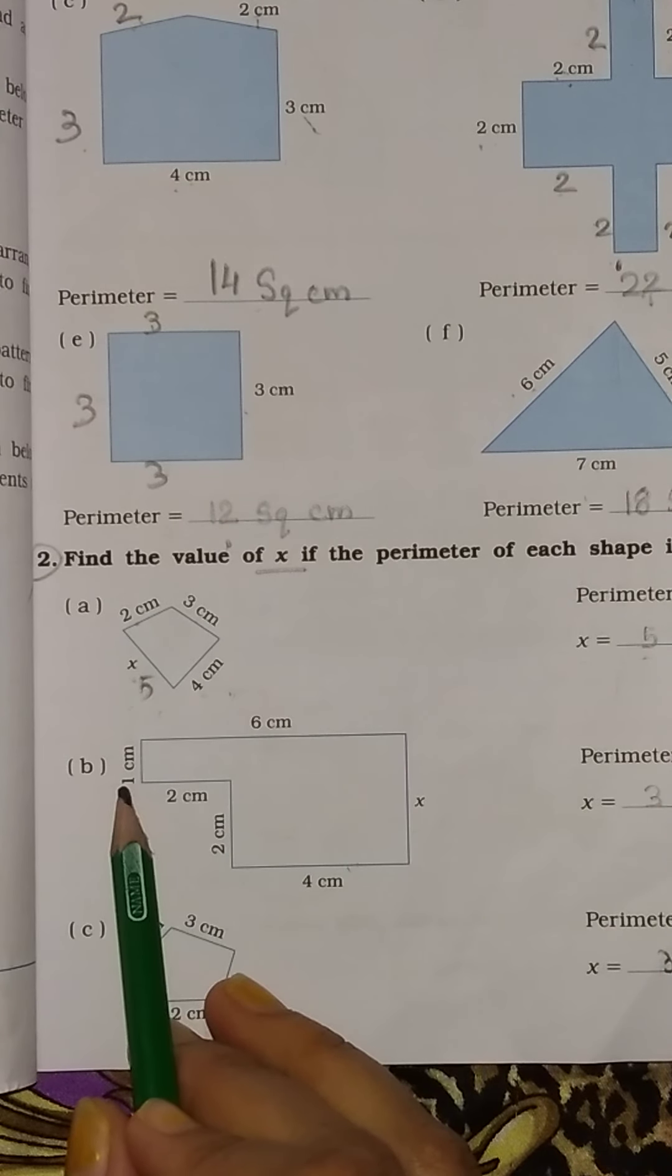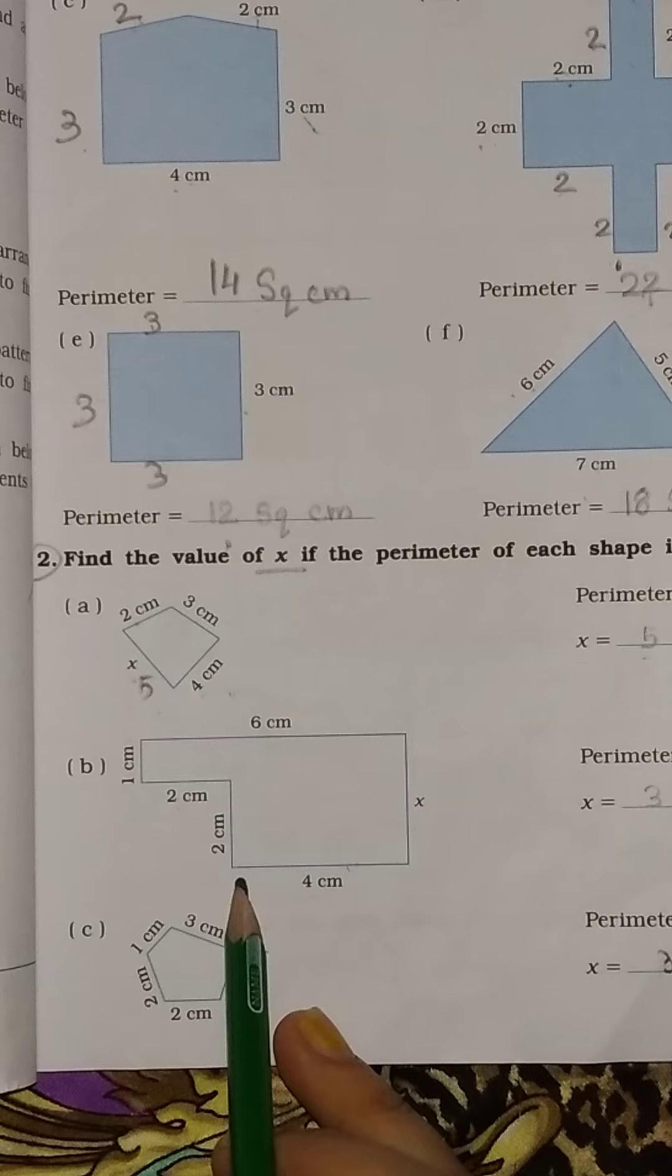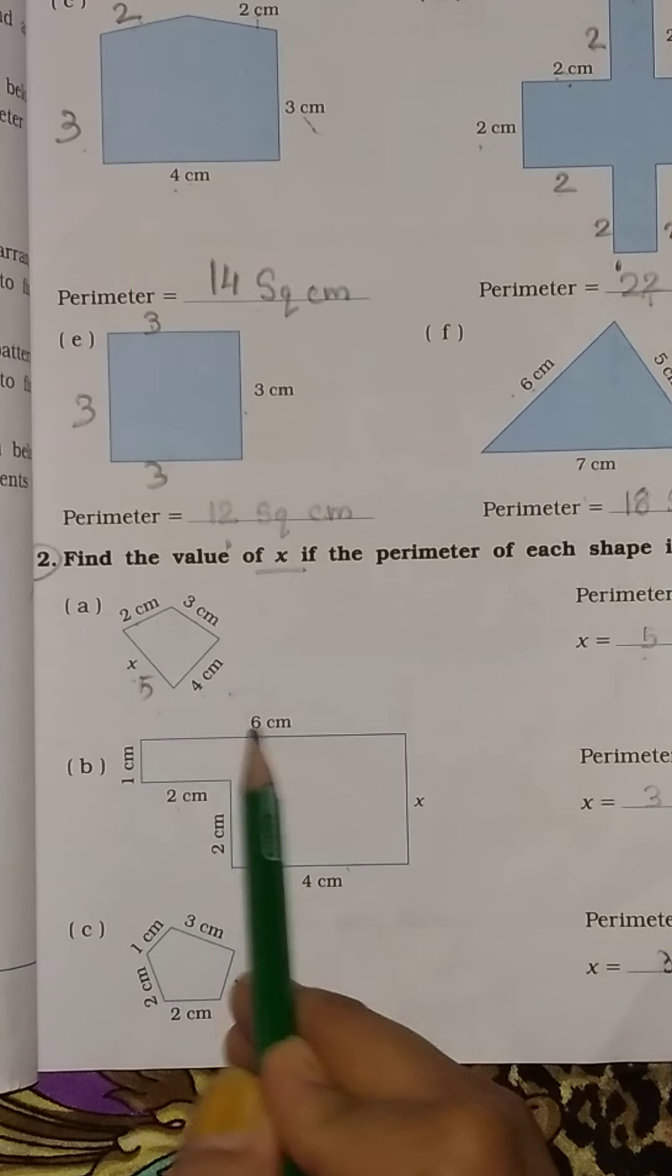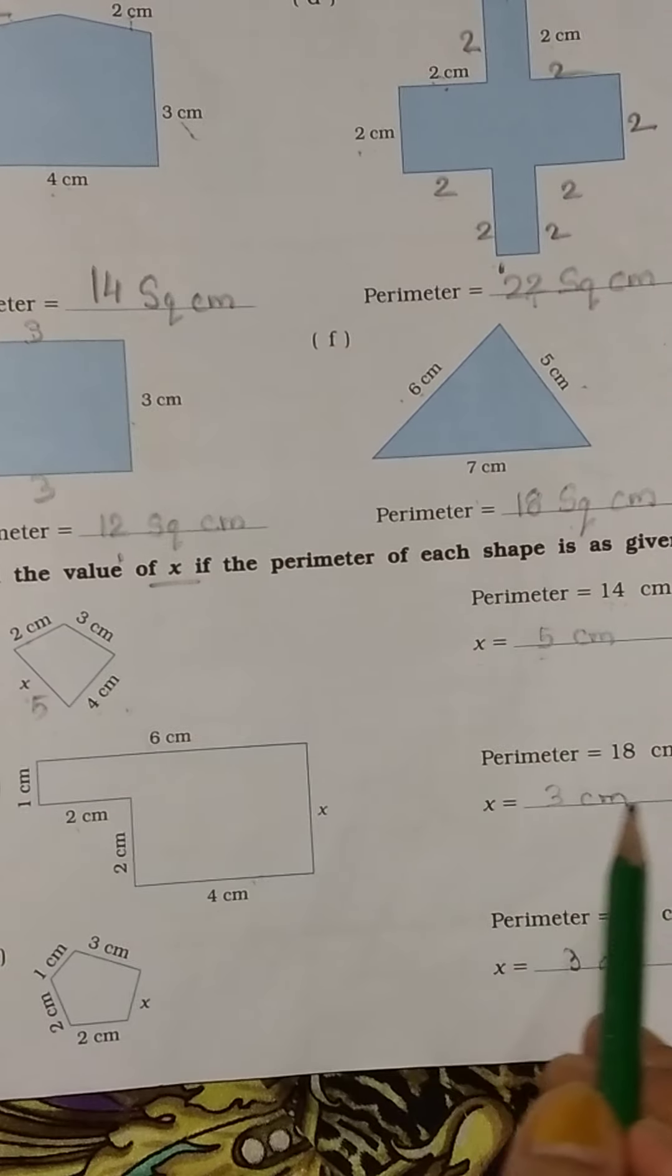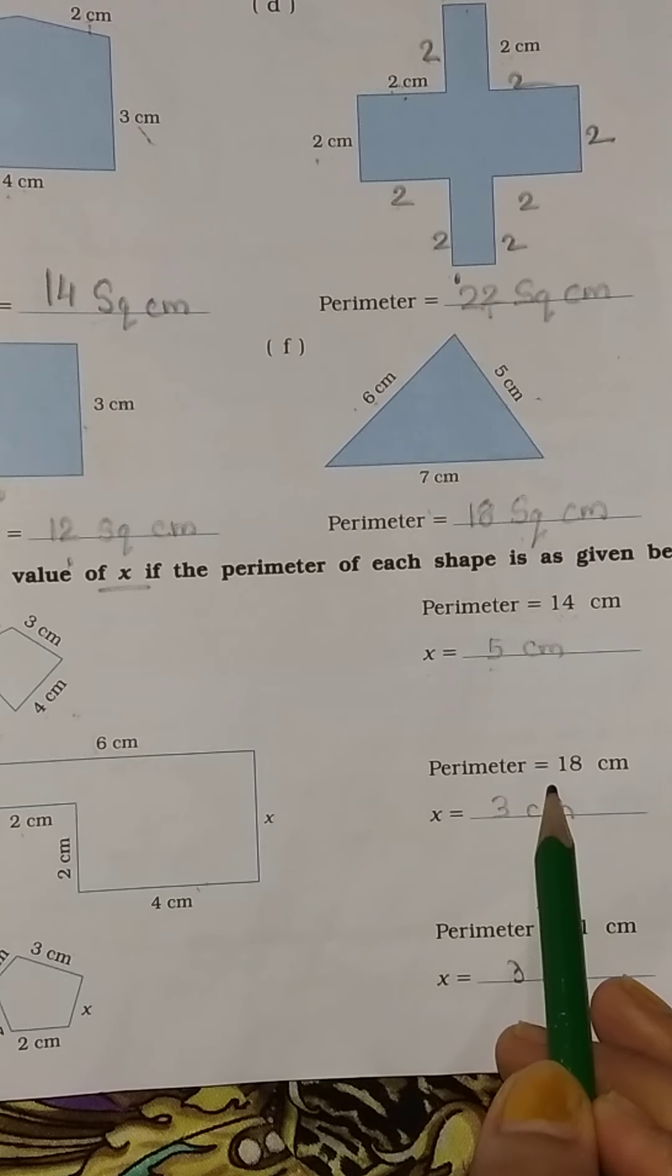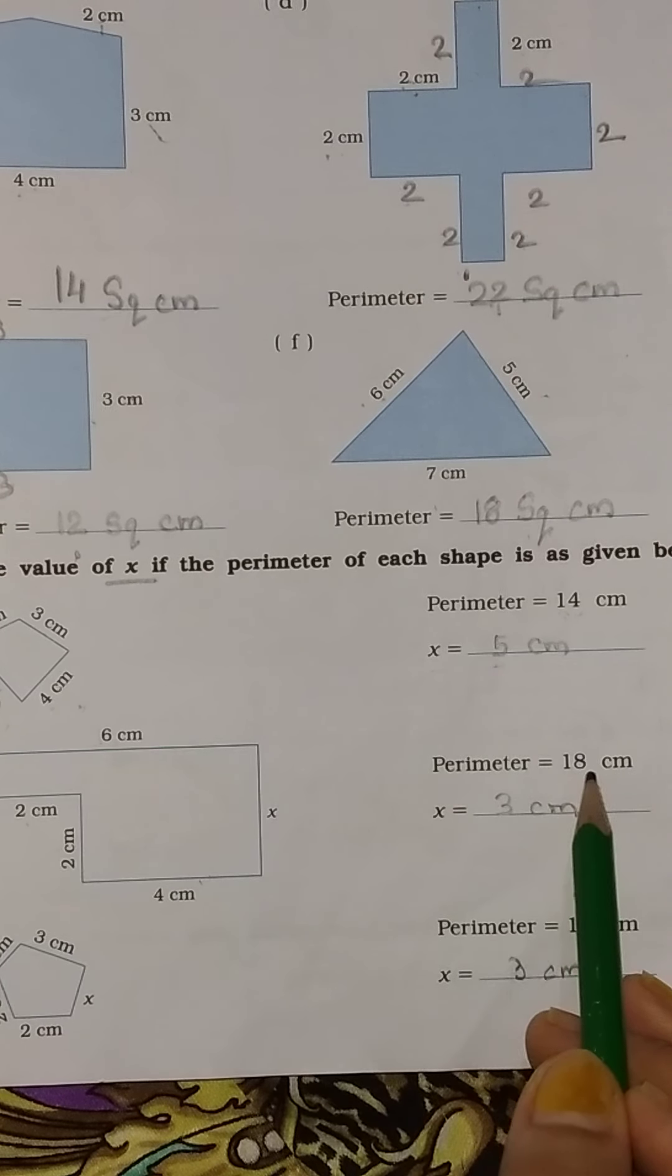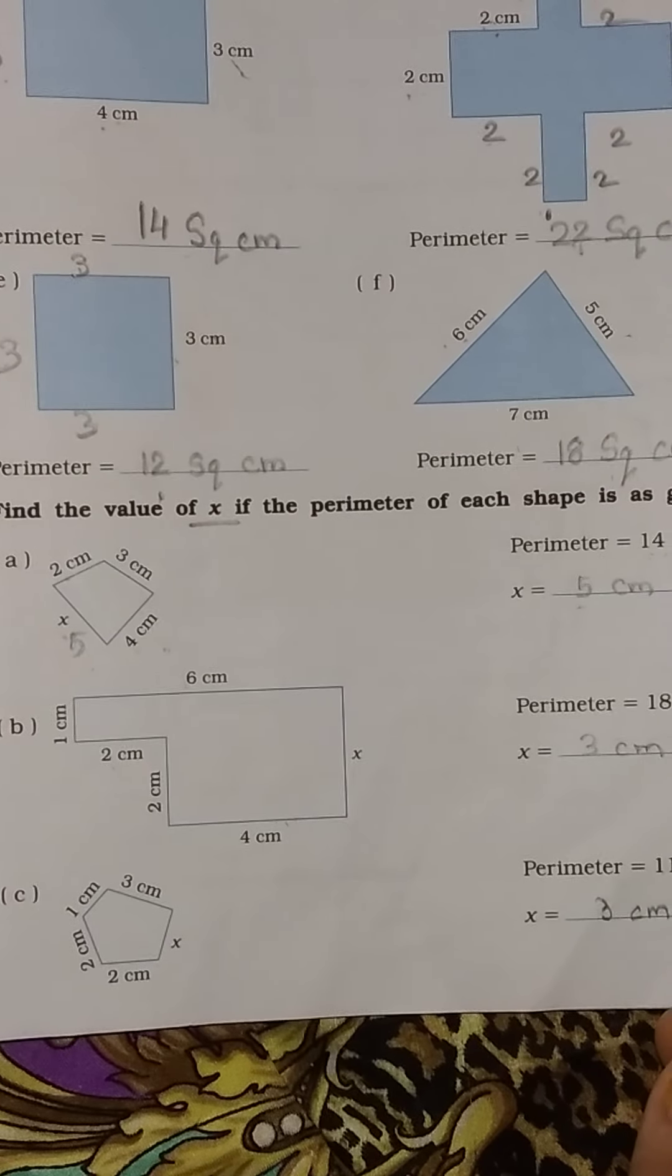Now see the second one. 1 cm, 2 cm, 2, 4, 6, and this you have to find out. The total perimeter is 18 cm. This is the perimeter.